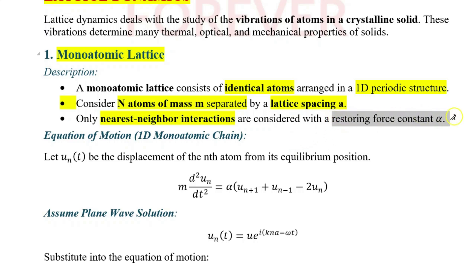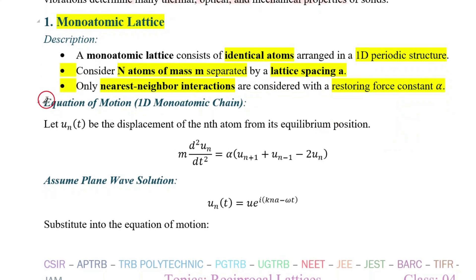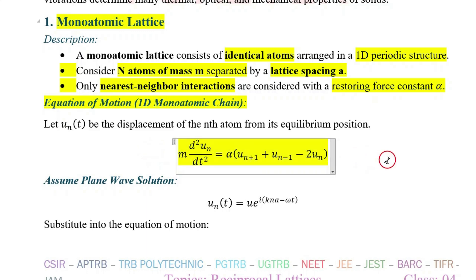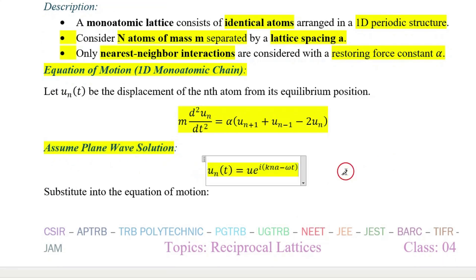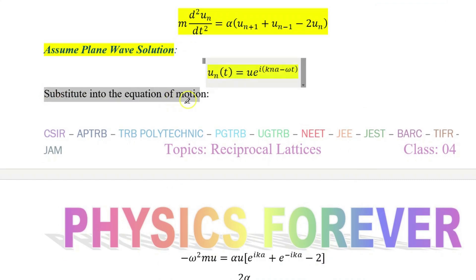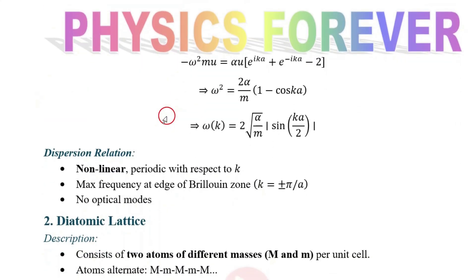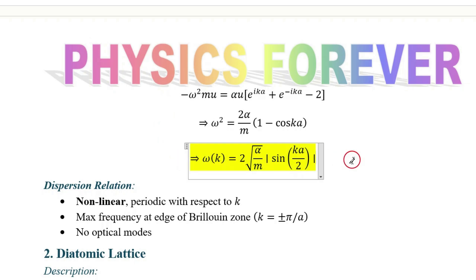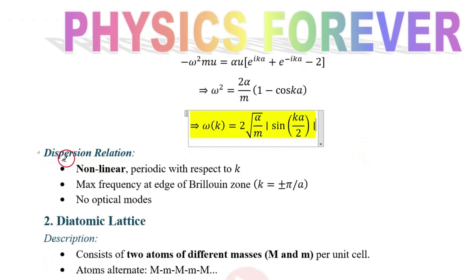With a restoring force constant alpha, the equation of motion for a one-dimensional monoatomic chain is derived. We assume a plane wave equation similar to E = E₀ · e^(i(kx − ωt)), as studied at the EMT level. Substituting this into the equation of motion, we obtain the key result. The last equation is the most important.